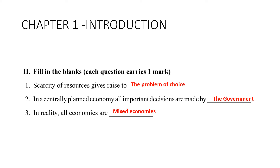Chapter one has only three fill-in-the-blanks. First: scarcity of resources gives rise to the problem of choice. I have highlighted it so that you remember. Second question: in a centrally planned economy, all important decisions are made by the government.